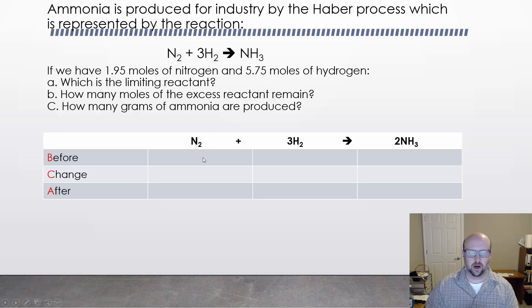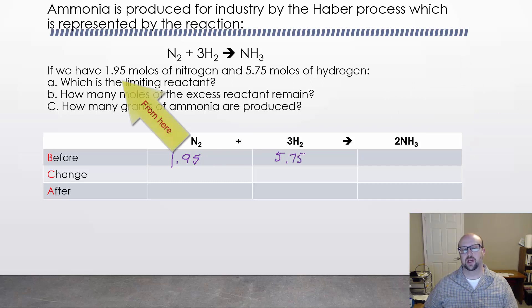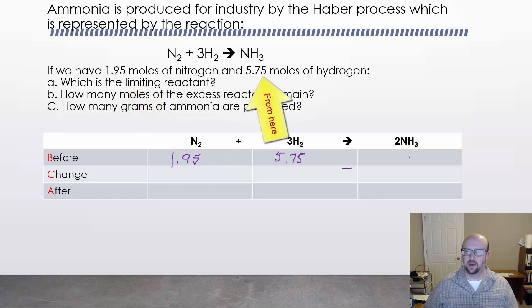This is really important because every time you use a BCA table, you need to write everything down in terms of moles. Every time you do a BCA table, everything should be in moles. So we initially have 1.95 moles of nitrogen, 5.75 moles of hydrogen, and we have 0 moles of the product. That's what we're trying to get to is the product. For us at Chem 1, we're always going to have 0 product at this level of chemistry.